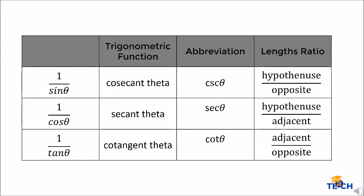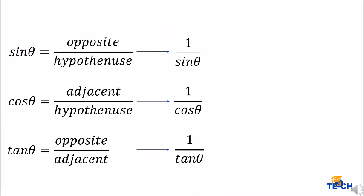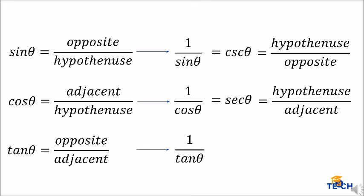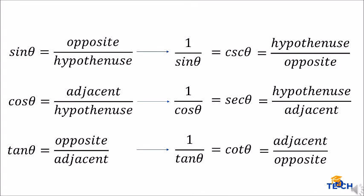1 over cosine theta is called secant theta, abbreviated as sec theta. 1 over tangent theta is called cotangent theta, abbreviated as cot theta. So the complete table: cosecant is hypotenuse over opposite, secant is hypotenuse over adjacent, and cotangent is adjacent over opposite — these are simply the reciprocals of the primary trigonometric functions.